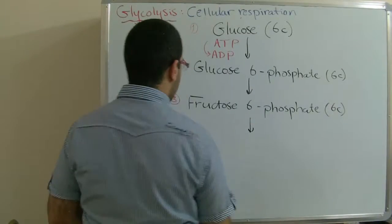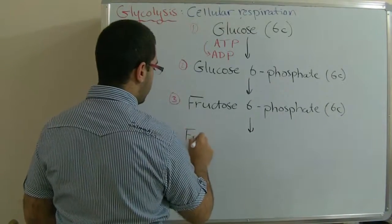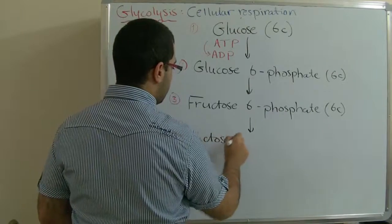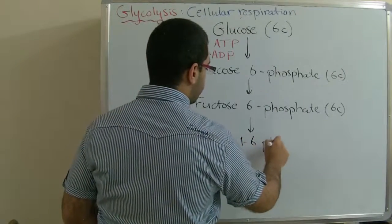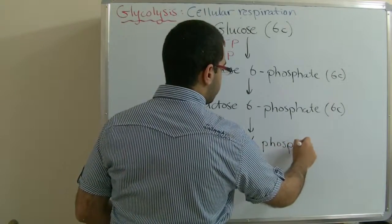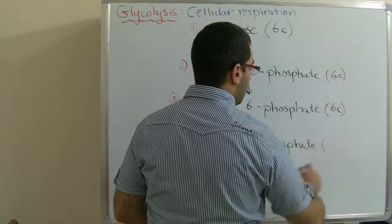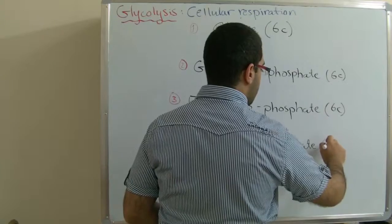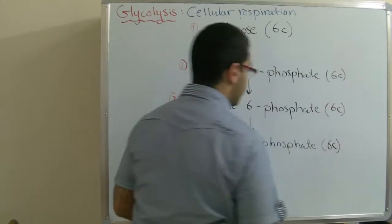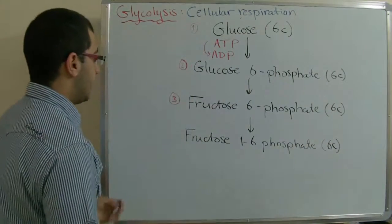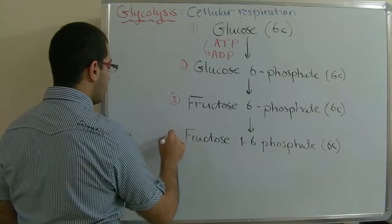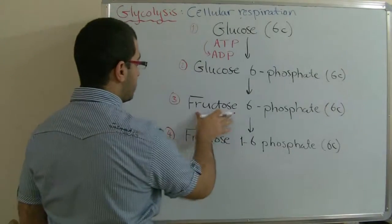Then, fructose changes into fructose 1,6-bisphosphate, with 6 carbon atoms. Here, we have fructose in common.